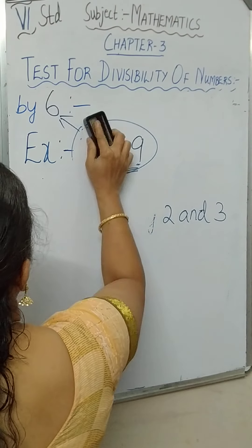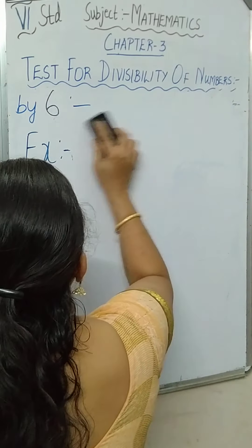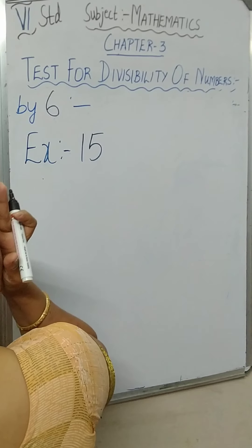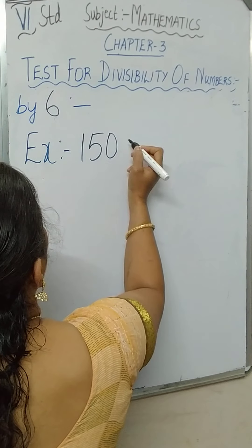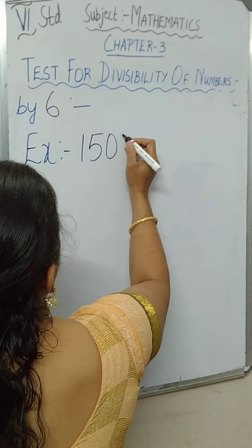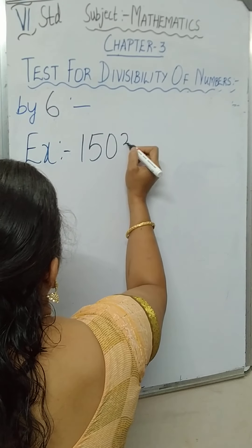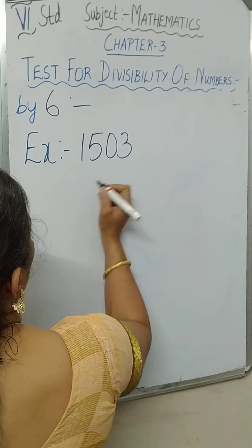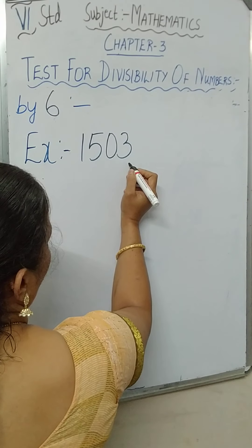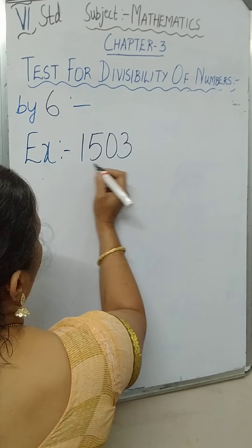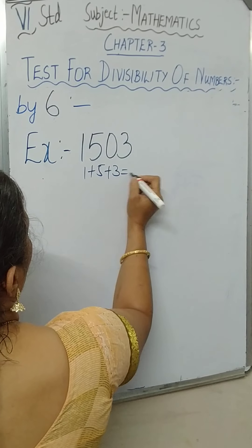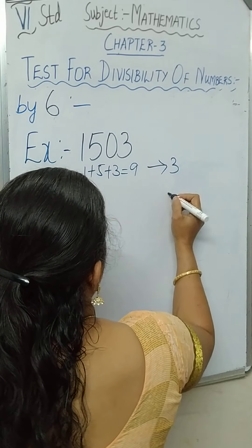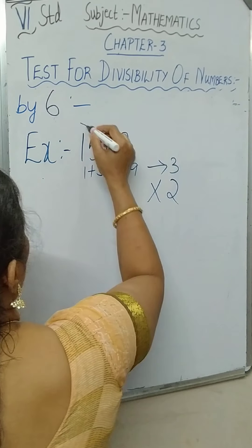Let us see another example: 1,500 and 1,503. For 1,503, check whether it is divisible by 2 and 3. It is not divisible by 2. But when you add the digits 1 plus 5 plus 3, you get 9, so it is divisible by 3 but not by 2. Therefore it is not divisible by 6 either.